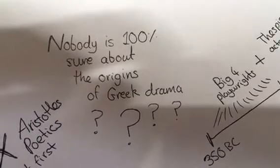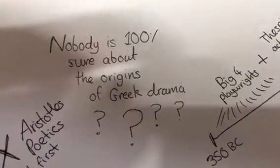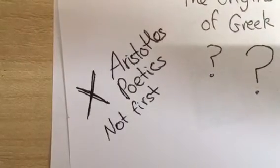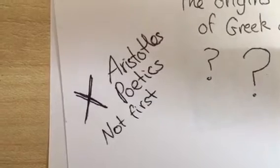Nobody is 100% sure about the origins of Greek drama. We might often think of Aristotle's Poetics, but actually, this was written 200 years after plays were already happening.